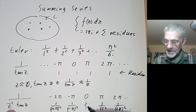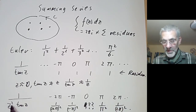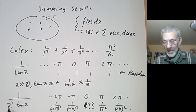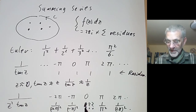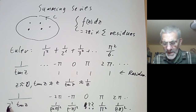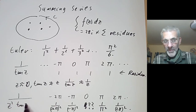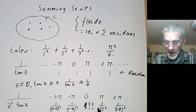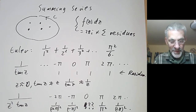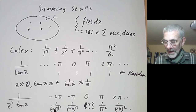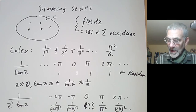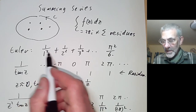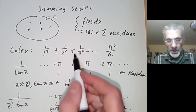Something funny happens at zero because the residue can't be 1/0², which would be infinite. What's happening is that at zero the pole is actually of order three rather than order one, so we have to work a bit harder to find it. You'll notice these terms, up to a factor of π², are exactly what we need to work out Euler's series.